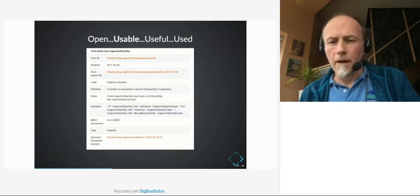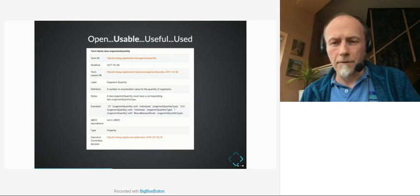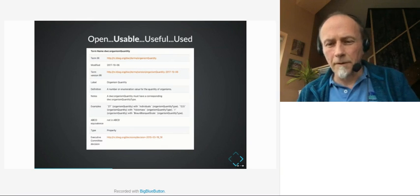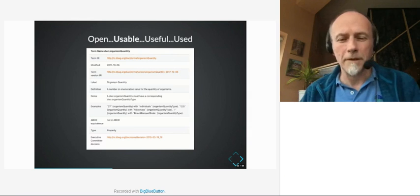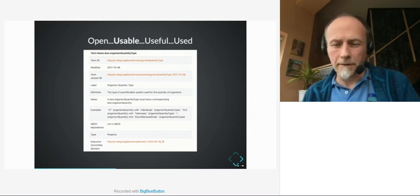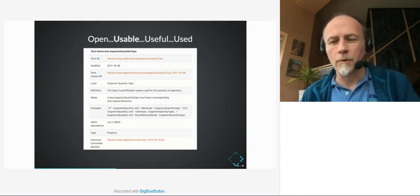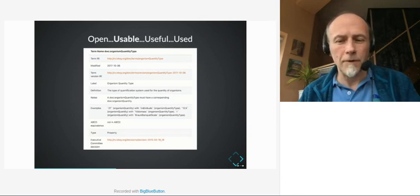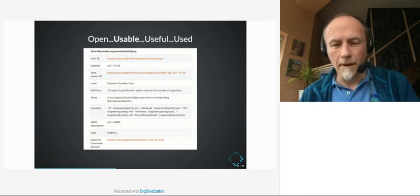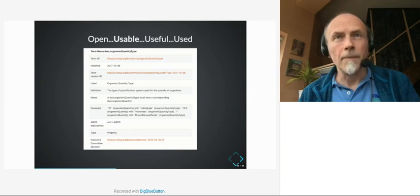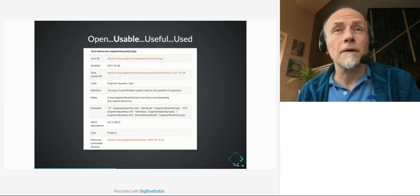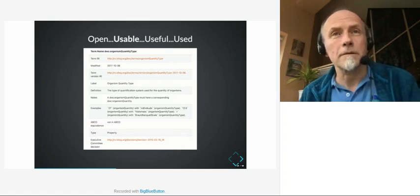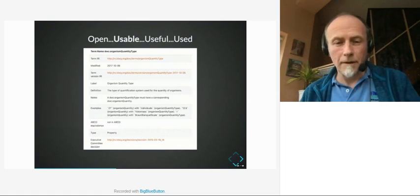Of course one size does not fit all, and there are many ways to express the quantity of an organism. Therefore Darwin Core has another term, the organism quantity type, which allows the data owner to express different measures for organism quantity. It can be number of individuals, biomass, or any other possible terms.